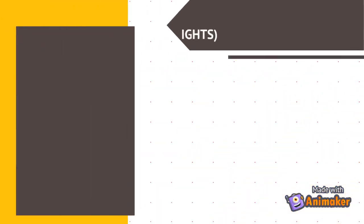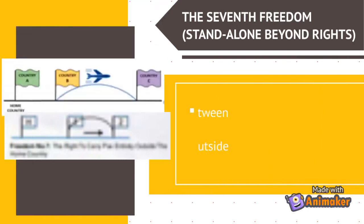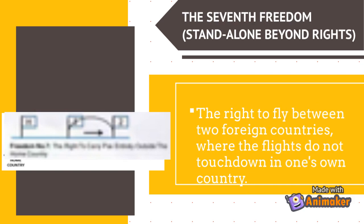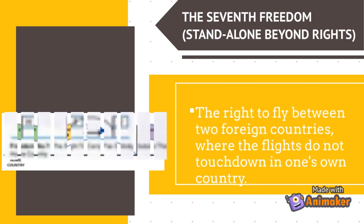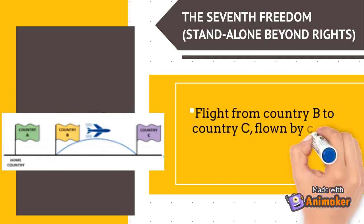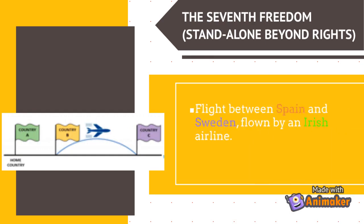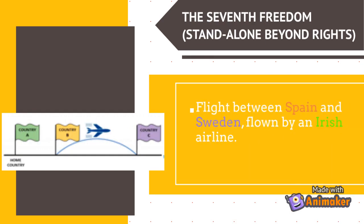The seventh freedom, stand-alone beyond rights, is the right to fly between two foreign countries — B to C — by a carrier operating entirely outside its home country A, where the flights do not touch down in one's own country. For example, a flight between Spain and Sweden flown by an Irish airline.